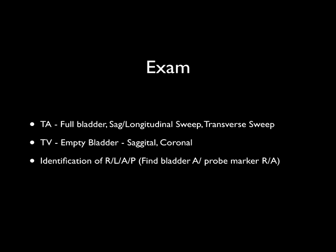The transvaginal ultrasound is going to be done with an empty bladder, and again we'll be going in the sagittal plane and then in the coronal plane. When we're looking at these images, it's important to try and identify which is the right side of the patient, the left side of the patient, which way is anterior, which way is posterior. The best way to do this is to find the bladder, which is going to be anterior on the patient, and the probe marker is either going to point to the patient's right side or to the patient's anterior side.